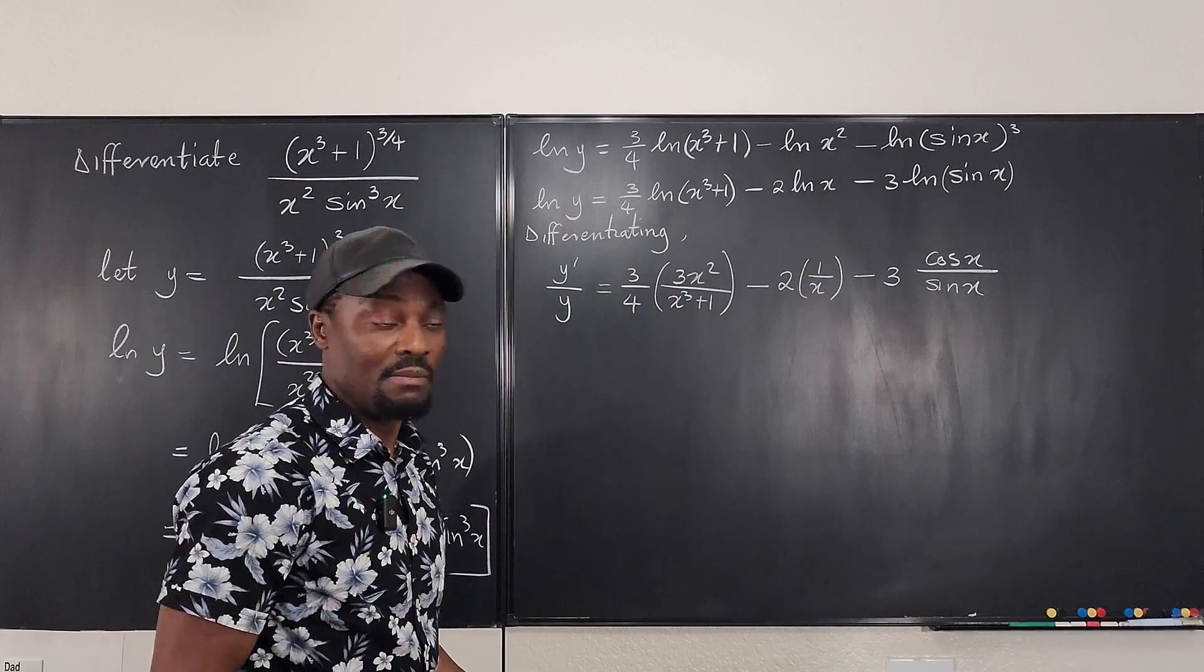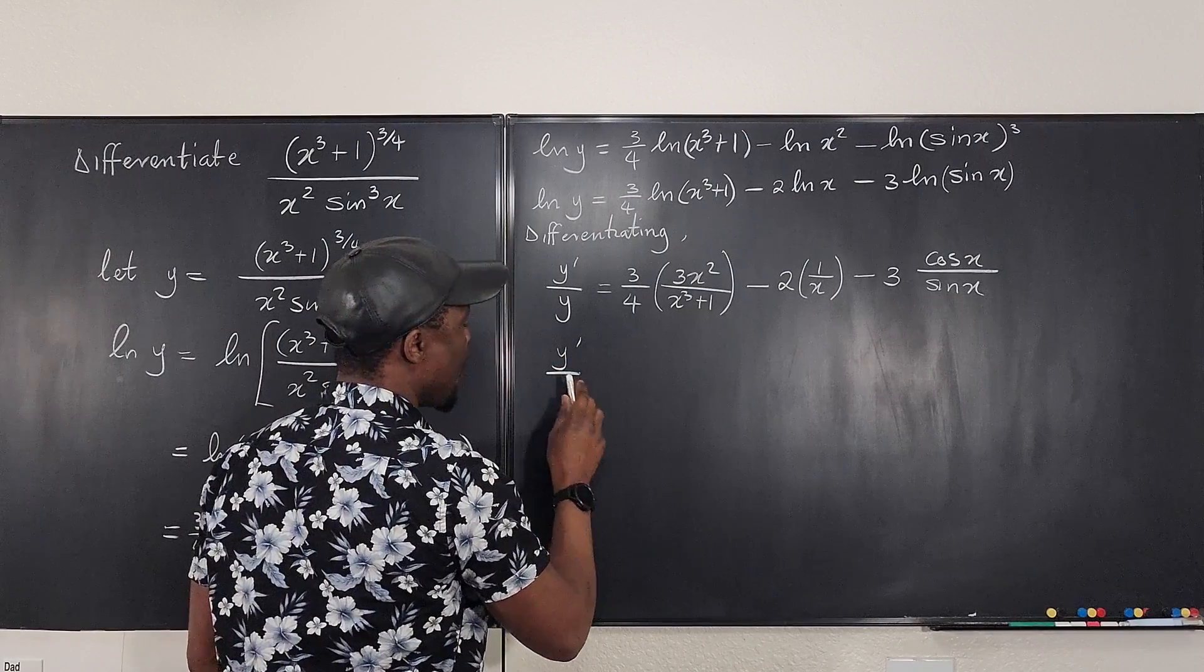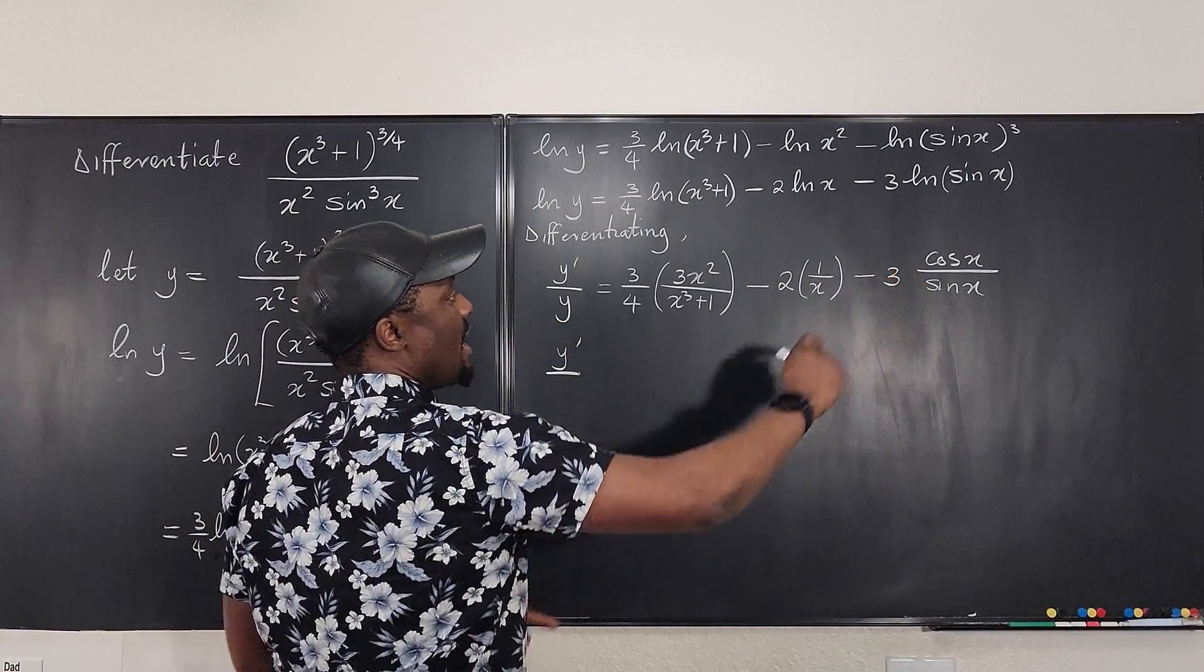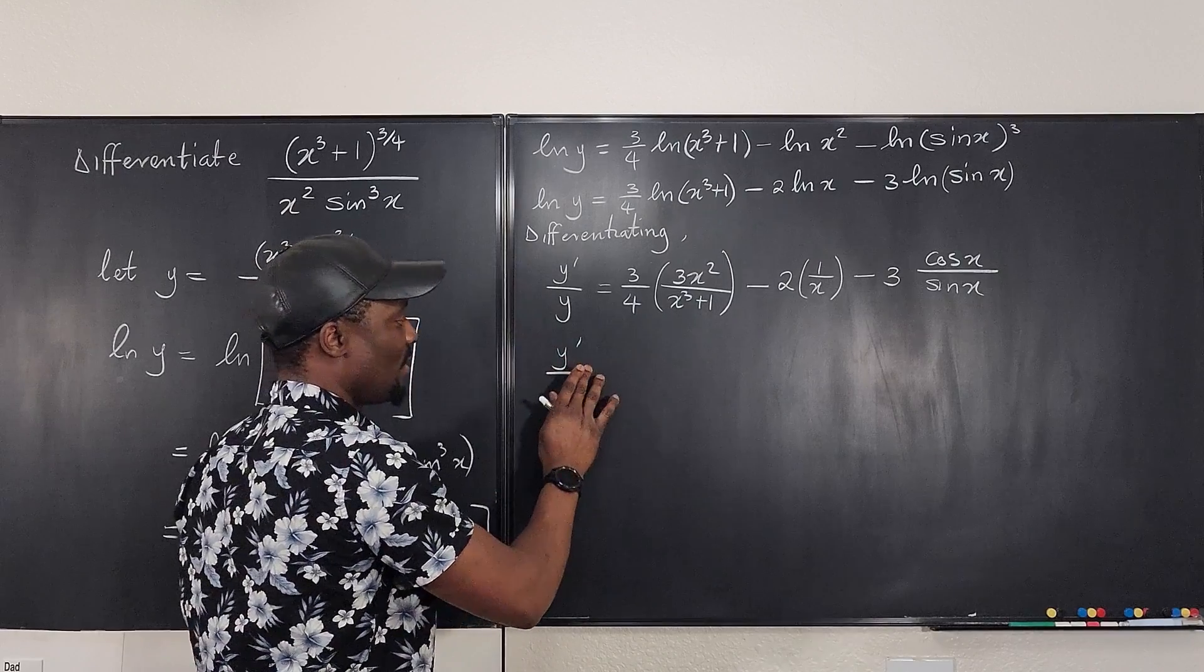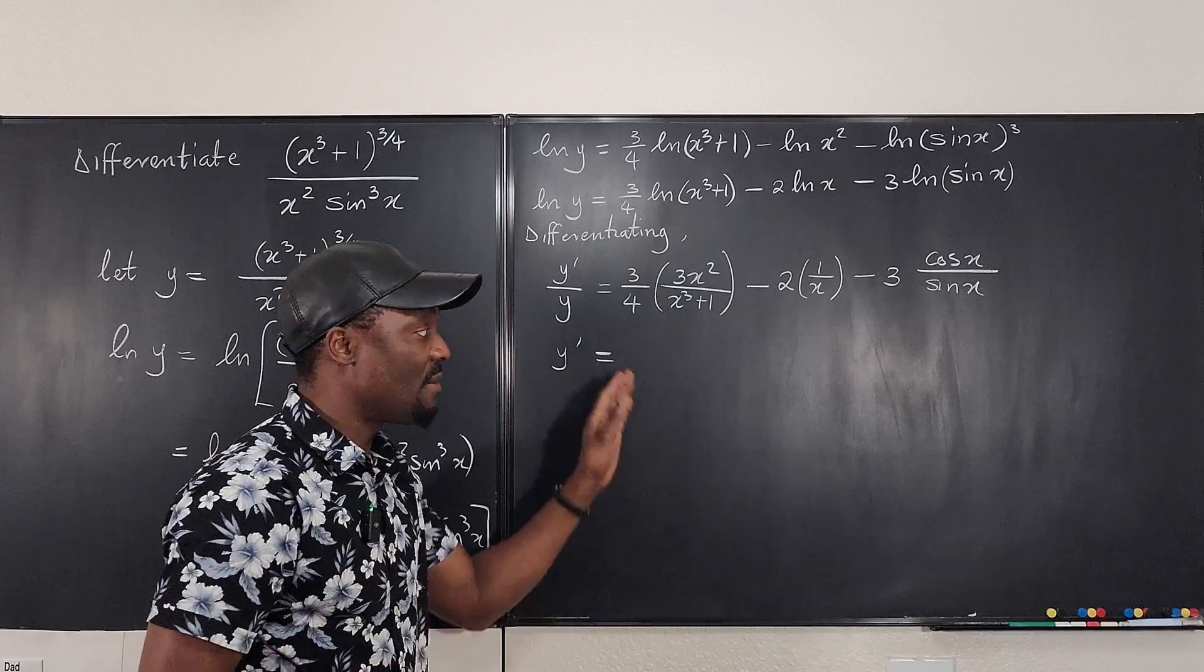What's left is just to do cleanup. Well, we know that y prime over y. In fact, I can multiply both sides by y so I can get rid of this y. So let's do that. So we have y prime will be equal to, and at the same time I'll be doing some cleanup.